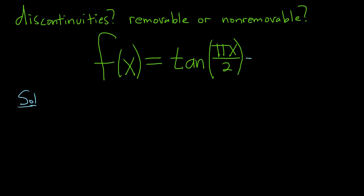Recall that tangent can be written as sine over cosine. So here it will be sine of pi x over 2 divided by cosine of pi x over 2. We're looking for the vertical asymptotes, in other words, where this function is undefined.